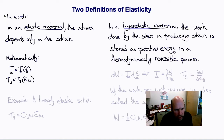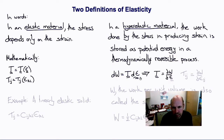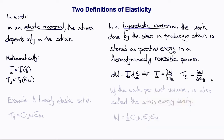We can write the first definition mathematically as the Cauchy stress tensor T is equal to a function of the strain tensor epsilon. In index notation, Tij equals Tij of epsilon_kl. If we were instead to consider the work done by the stresses, then an increment of work dW is T d_epsilon, or T equals del W del epsilon, so Tij equals del W del epsilon_ij. W, the work per unit volume done by the stress in performing strain on the material, is also known as the strain energy density function.